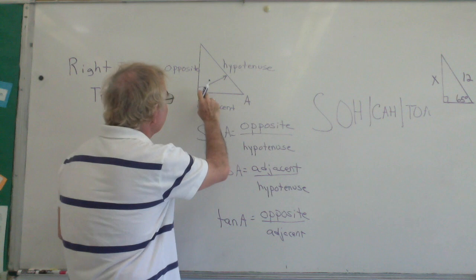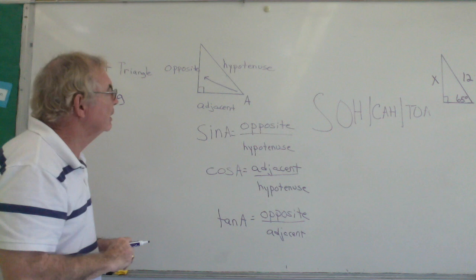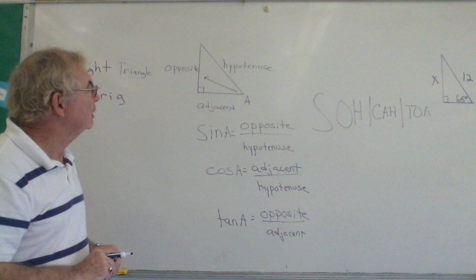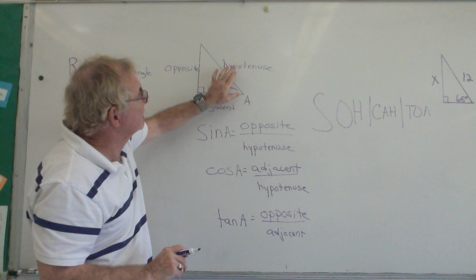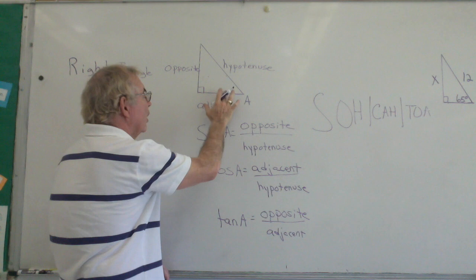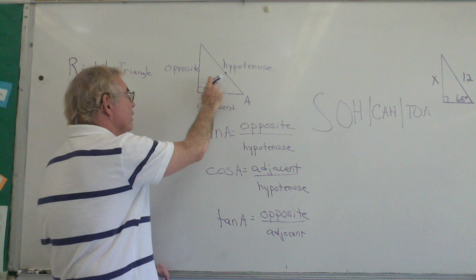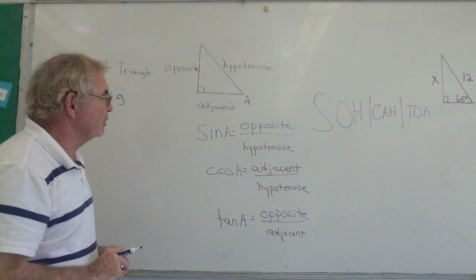Now, angle A: if you shoot straight across, that's the opposite side. And then there's one more side — the side that's touching angle A but can't be the hypotenuse because we've already named it, so it's the adjacent. Our three sides of a right triangle are: the hypotenuse (across from 90°), the opposite (straight across from the angle), and the adjacent (touching the angle but not the hypotenuse).